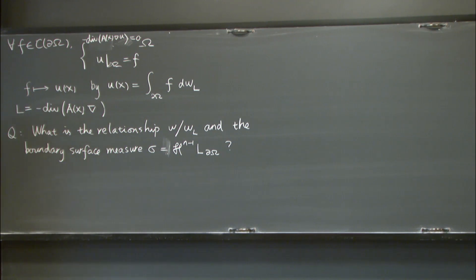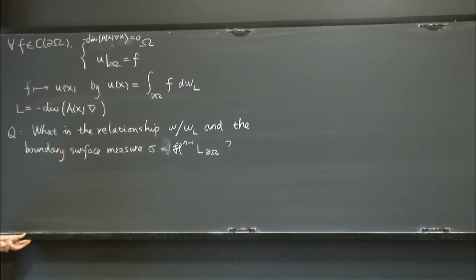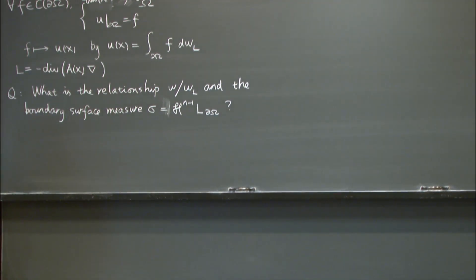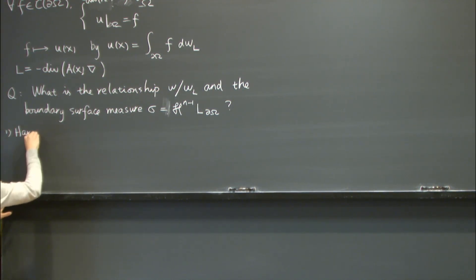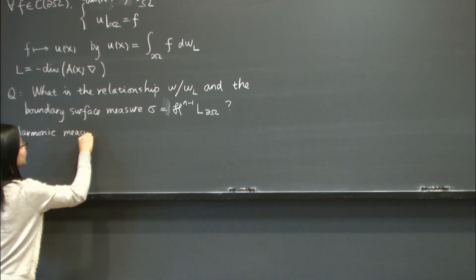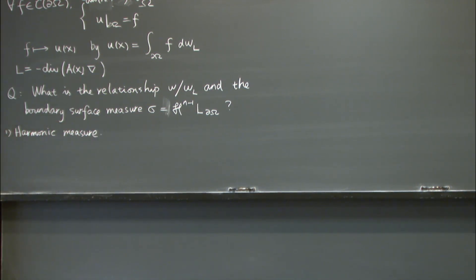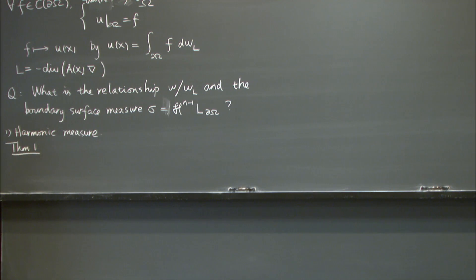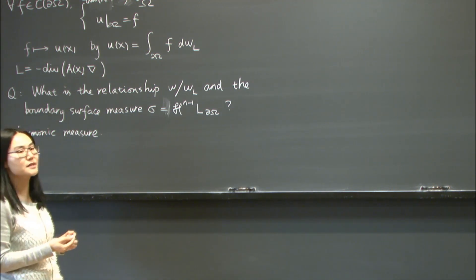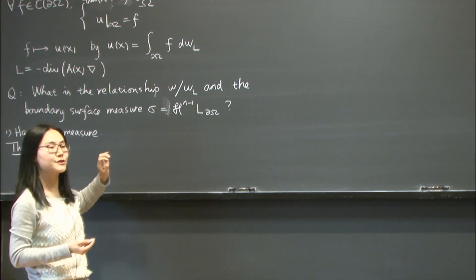Yesterday at the mathematical conversation I talked about some examples and interesting features of this question. Today I will cut it short and only state a few results relevant to my topic. For harmonic measure — meaning L equals the Laplacian — Dahlberg gives a sufficient condition to guarantee mutual absolute continuity between harmonic measure and the boundary surface measure.